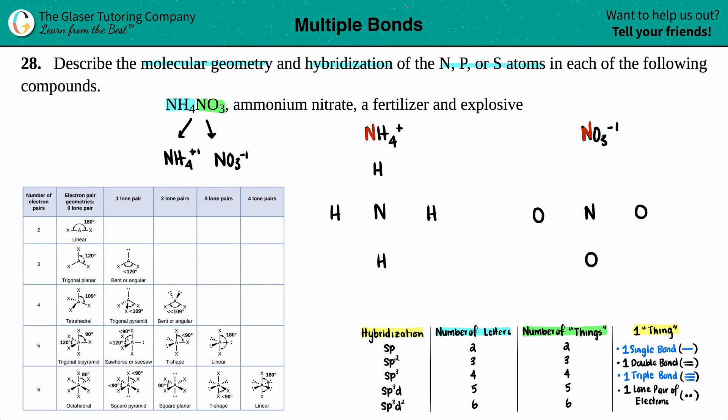Now we're gonna put our valence electrons. Each hydrogen has one valence electron, so one, two, three, four. Each nitrogen has five valence electrons, so one, two, three, four, five for both nitrogens. The oxygen has six valence electrons, so one, two, three, four, five, six for each of the three oxygens.